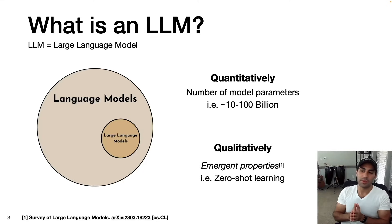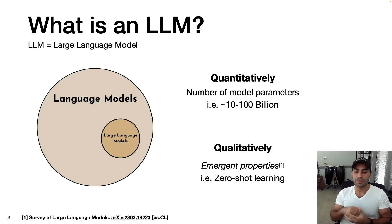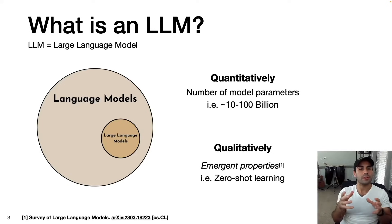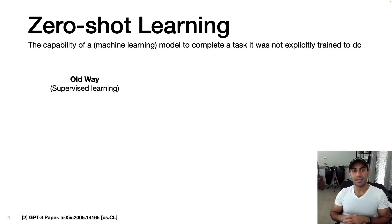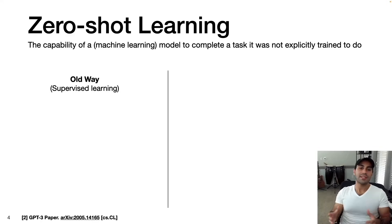There's also a qualitative perspective, and these so-called emergent properties that start to show up when language models become large. Emergent properties is the language used in a survey of large language models paper available on arXiv — a really great beginner's guide I recommend. Essentially what this term means is there are properties in large language models that do not appear in smaller language models. One example of this is zero-shot learning — the capability of a machine learning model to complete a task it was not explicitly trained to do.